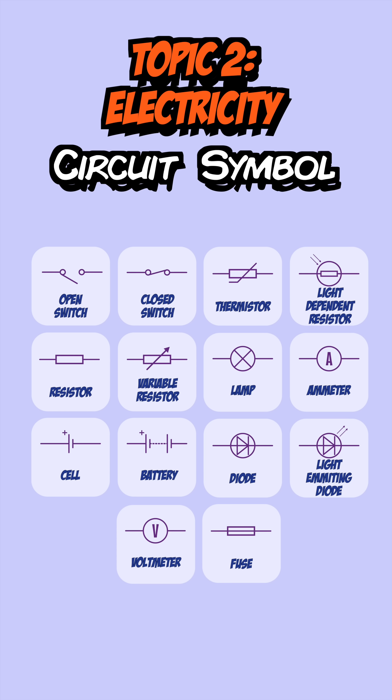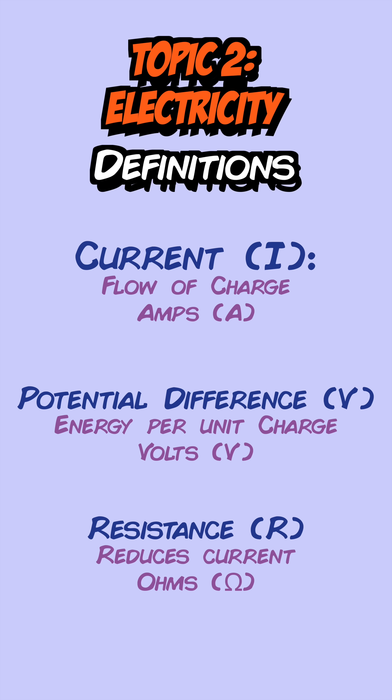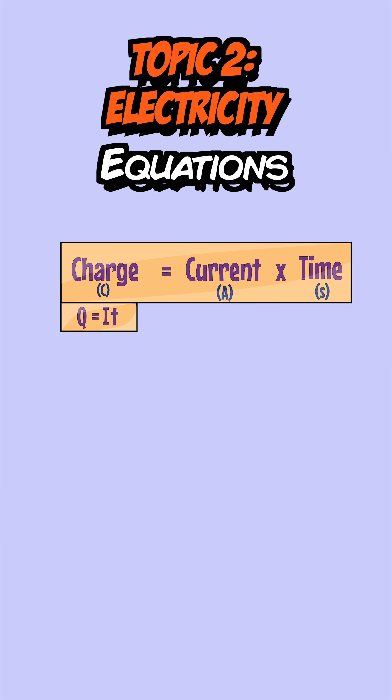The next topic is all about electricity, and here are every single circuit symbol you need to know. Current is defined as the flow of electrical charge and is measured in amps. Potential difference is the energy per unit charge, measured in volts — it's basically the force that pushes the current around the circuit. Resistance is a property that reduces the flow of current and is measured in ohms. The two equations related to these definitions are Q = IT and V = IR.